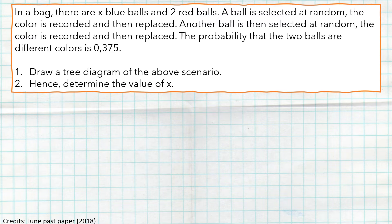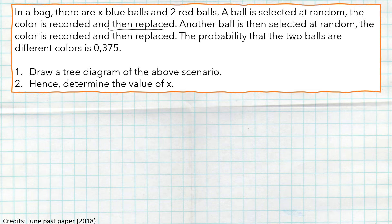Let's now look at a more challenging question from the June 2018 paper, Question 10. In a bag there are x blue balls and two red balls. A ball is selected at random, its color is recorded, and then it is replaced. Another ball is then selected at random, its color is recorded, and then replaced. The probability that the two balls are different colors is 0.375. Draw a tree diagram for this scenario.